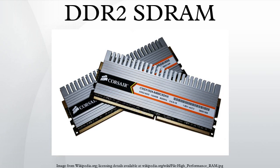DDR2-SDRAM is supplied in DIMMs with 240 pins and a single locating notch. Laptop DDR2 SO-DIMMs have 200 pins and often come identified by an additional S in their designation. DIMMs are identified by their peak transfer capacity. Some manufacturers label their DDR2 modules as PC2-4300, PC2-5400, or PC2-8600 instead of the respective names suggested by JEDEC. At least one manufacturer has reported this reflects successful testing at a higher than standard data rate, whilst others simply round up for the name.